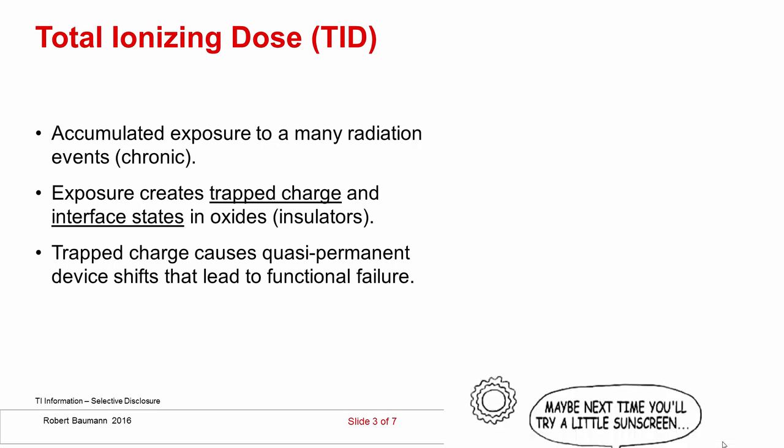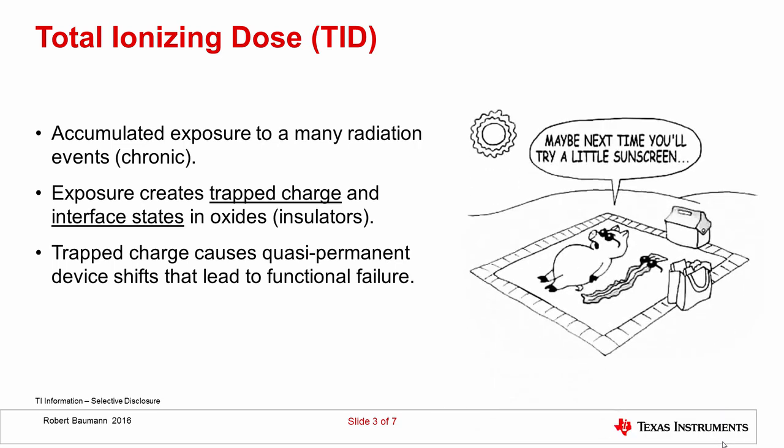There's a little cartoon here to help you think about what total dose is like — two little pigs, one that used suntan lotion and one that didn't, and one turned to bacon. Very much like a sunburn, total ionizing dose is something where over time you're accumulating a radiation exposure, your oxides are trapping charge, and over time that trapped charge will build up and cause shifts in your devices.